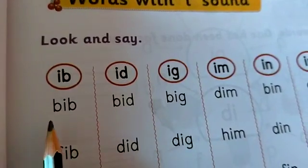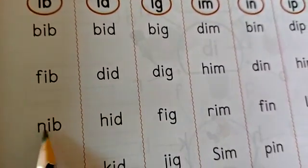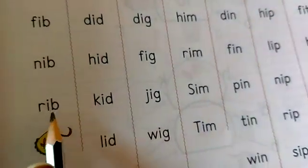With I b. B I b, bib. F I b, fib. N I b, nib. R I b, rib.